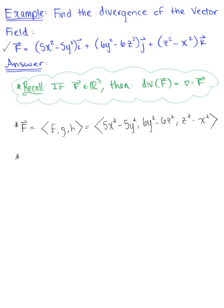We're ready now to compute the divergence. We want to compute the divergence of this three-dimensional vector field, which we recall is equal to the dot product of del and that given vector field.